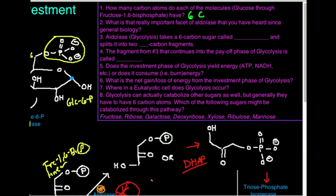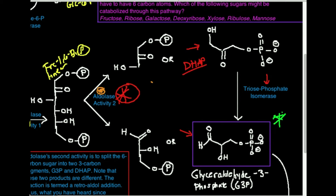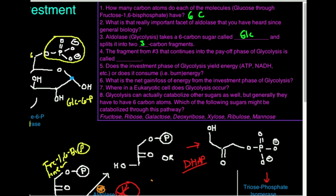Number three: glycolysis takes a six-carbon sugar called glucose and splits it into two blank carbon fragments — it's going to split it into two three-carbon fragments. The fragment from number three that continues into the payoff phase of glycolysis is what? Did we say DHAP continues? No — it has to get converted into G3P to be useful. G3P is our useful molecule, so that's what goes into the payoff phase — called G3P, or in reality, glyceraldehyde-3-phosphate.